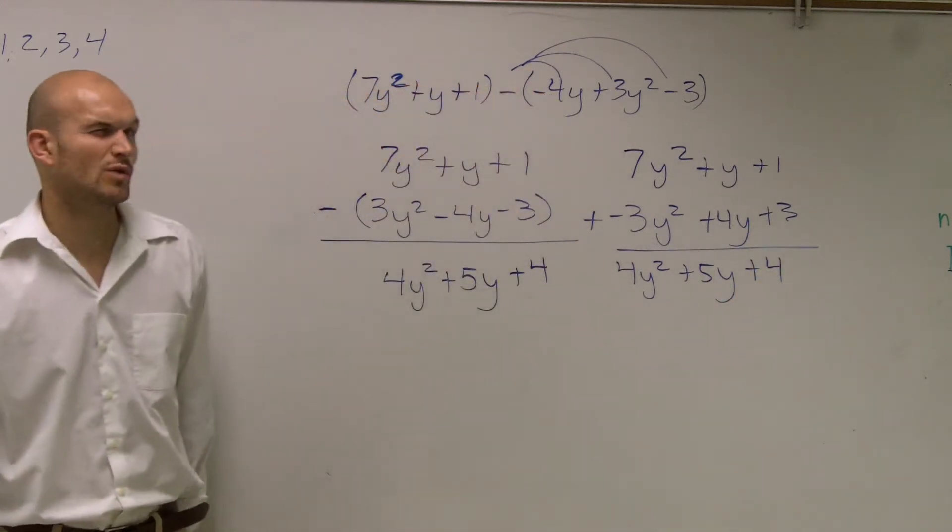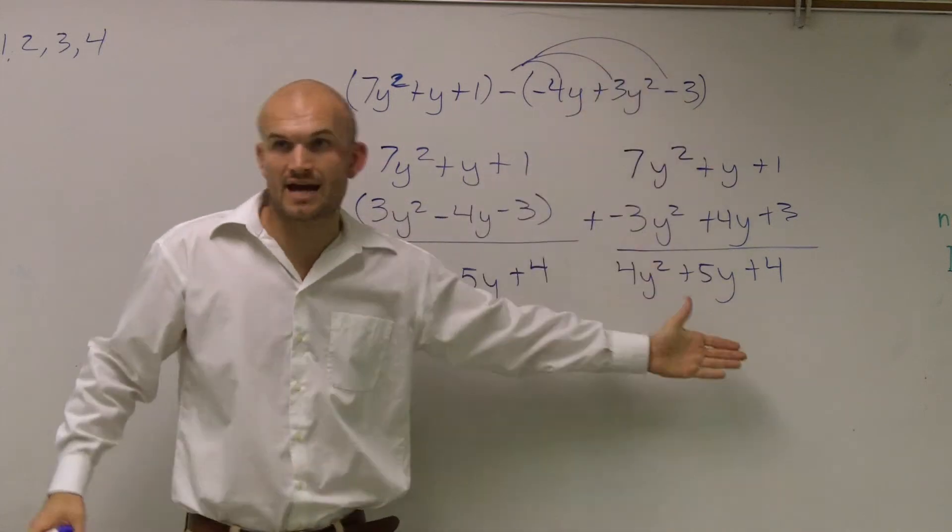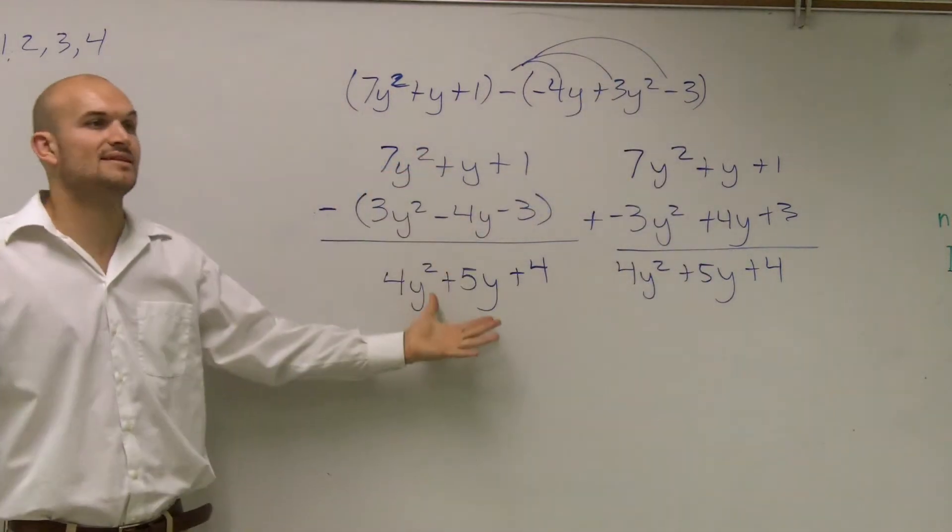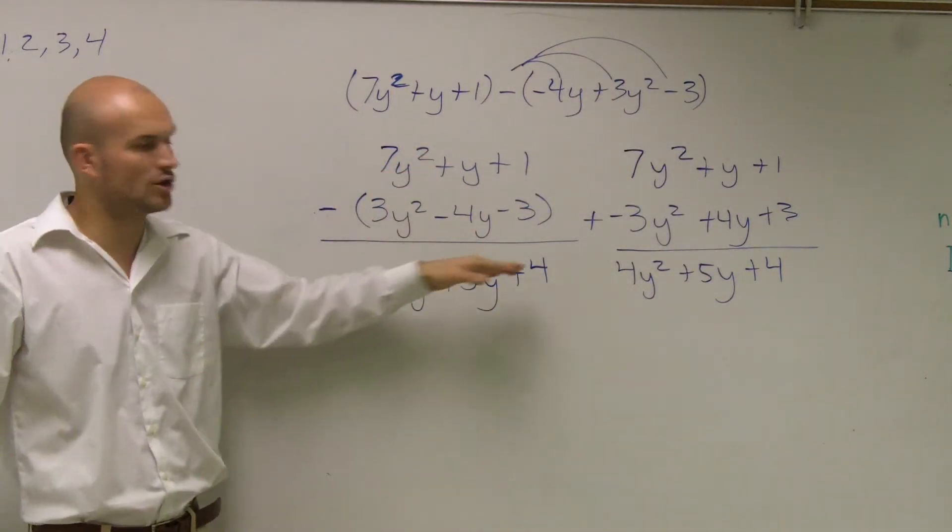Either way you guys want to do it works. I usually like to distribute the negative sign and then add vertically. However, if this makes sense to you and you can do it, you notice that I get the same answer.